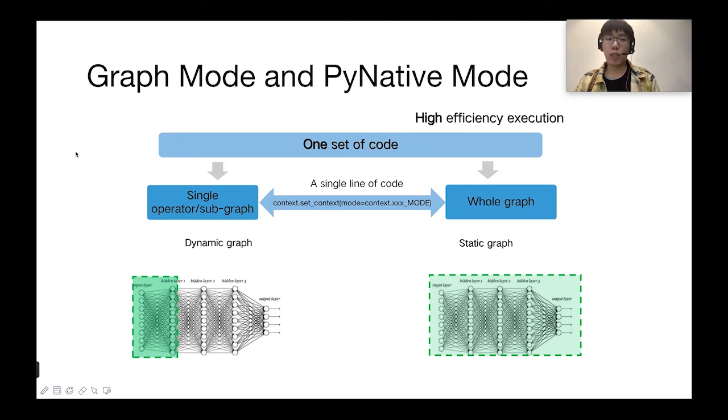We talk about the MindSpore graph mode and PyNative mode. Currently, there are two execution modes of mainstream deep learning framework: static graph mode and dynamic graph mode. The static graph mode has relatively high training performance but is difficult to debug. On the contrary, the dynamic graph mode is easy to debug but is difficult to execute efficiently. MindSpore provides an encoding mode that unifies dynamic and static graphs, which greatly improves the compatibility between static and dynamic graphs. Instead of developing multiple sets of code, users can switch between the two modes by changing only one line of code. We simply set the context mode equals context dot graph mode or PyNative mode to set your mode.